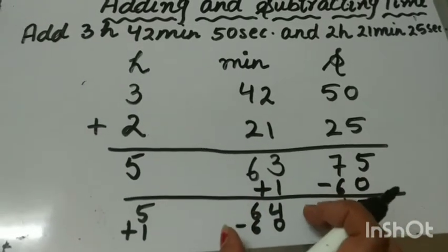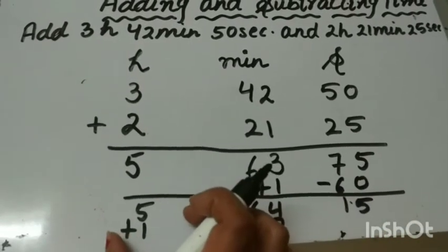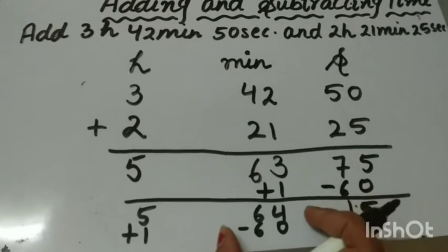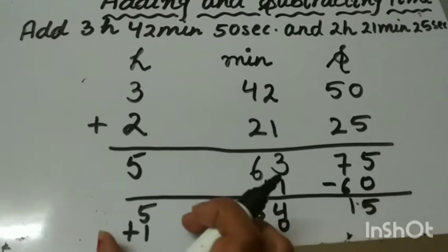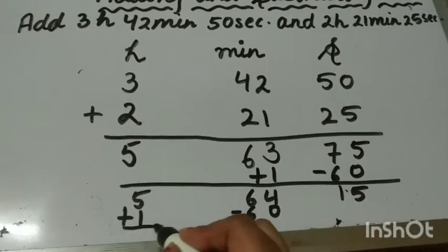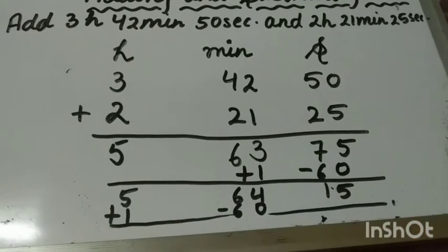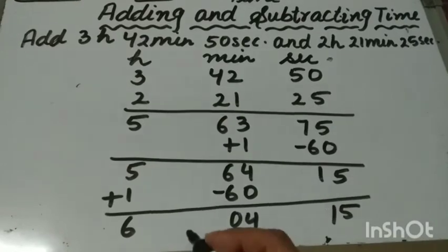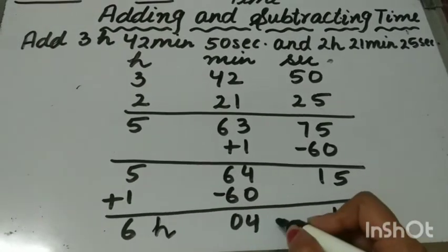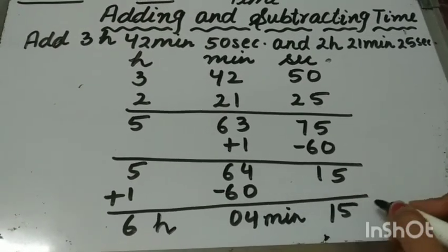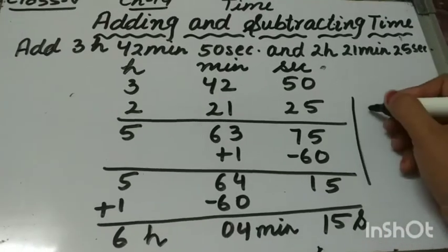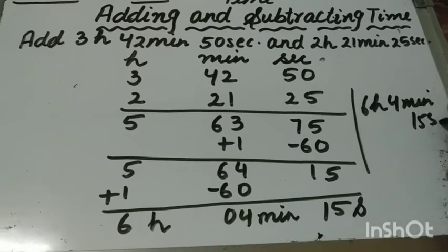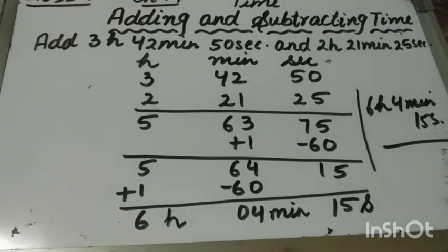We are adding 1 to the hours here. So after adding, the answer will become 6 hours, 4 minutes and 15 seconds. So your answer will be 6 hours, 4 minutes and 15 seconds. This is how we add time.